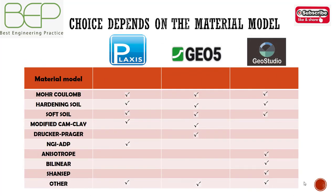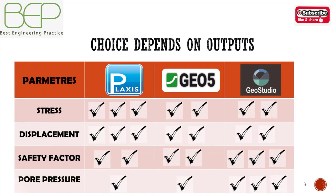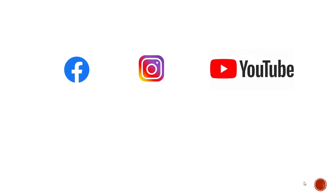Another factor is the material model — not all material models are used by all software, so depending on the material model you need, you can make your choice. The outputs also matter: depending on what data you need at the end, you can make your choice. PLAXIS is very interesting when you want to get stresses and displacements. For slope stability analysis, GeoStudio is better, and for flow analysis, PLAXIS Flow is also a strong option.